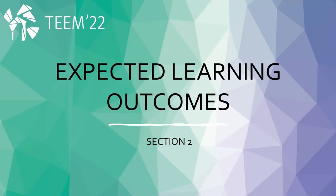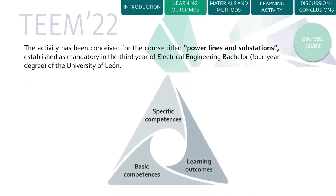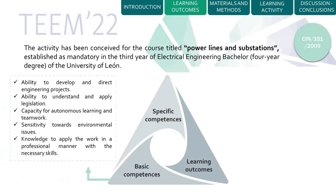The expected learning outcomes of this activity can be seen on the screen. The activity has been conceived for the course titled Power Lines and Substation, established in the Electrical Engineering Bachelor's degree at the University of León. The specific basic and learning outcomes are specified here, and they are all regulated by order CIN/351 from the year 2009.